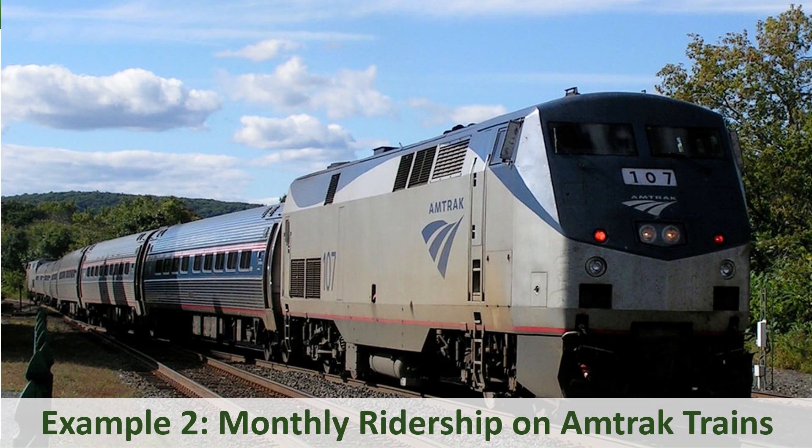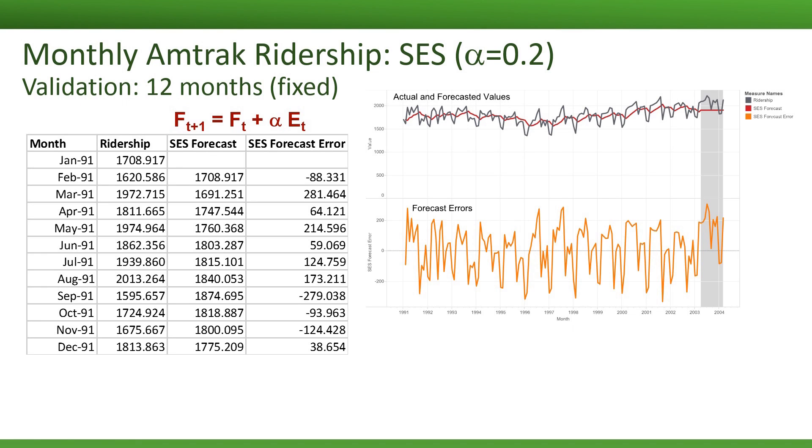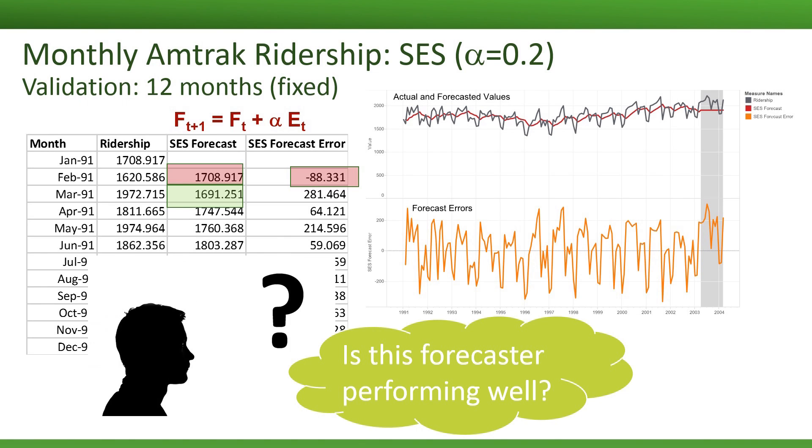Remember the monthly ridership on Amtrak. This series exhibited both a trend and seasonality. What's going to happen when we apply simple exponential smoothing? The SES forecasts are computed in the exact same way as before. We take the previous forecast and add its forecast error times alpha. For example, the forecast for March of 1991 is equal to the February 1991 forecast, plus 0.2 times the February 1991 forecast error. Looking at the performance chart, do you think this forecaster is performing well? Why do you think it's working the way it is?